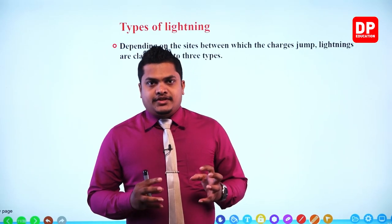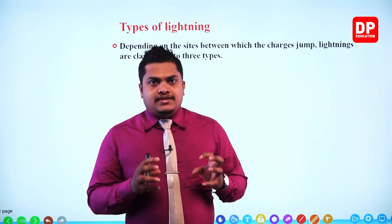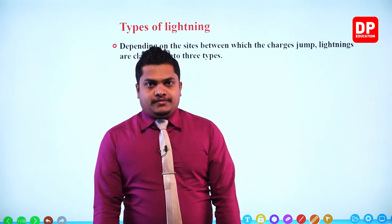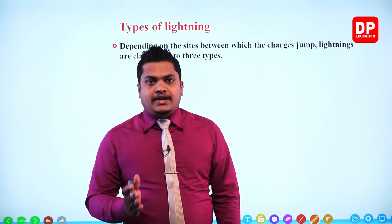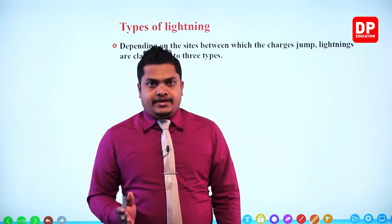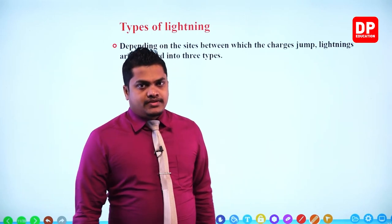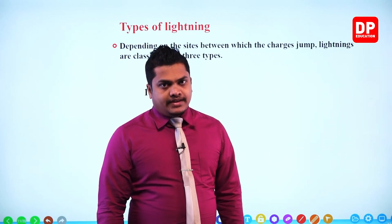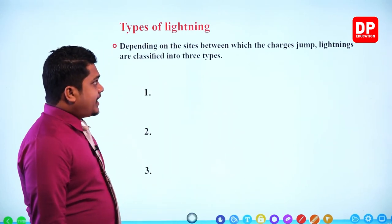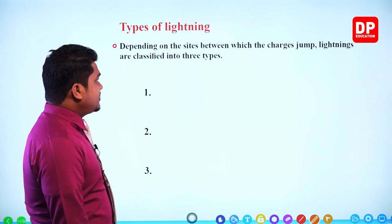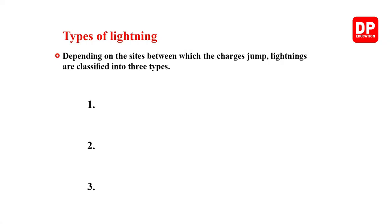So my dear children, in the earlier chapter we discussed how lightning occurs. Now within this chapter, we'll be discussing the main types of lightning. Depending on the sides between which the charges jump, lightnings are classified into three types.